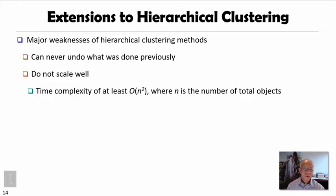This requires that every split or merge must be finer. That's too high a requirement to generate high quality clusters. The second problem is the methods may not scale well, because every time when you try to merge, you try to check all the possible pairs, so the complexity is at least n squared.